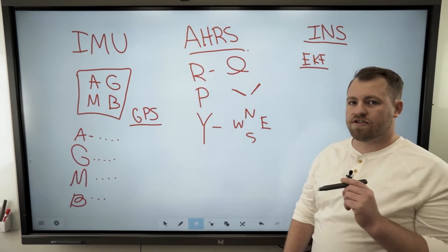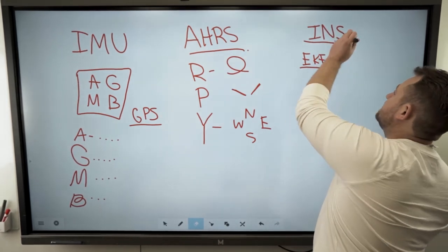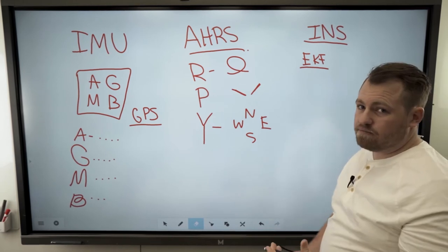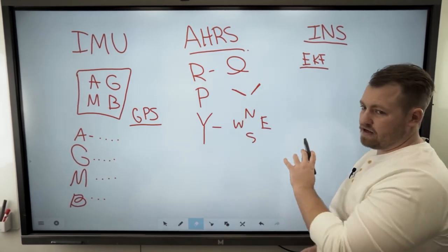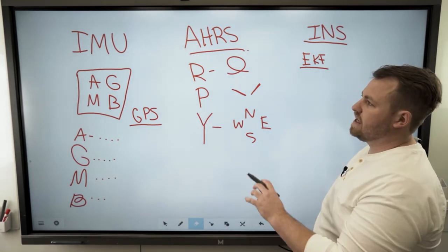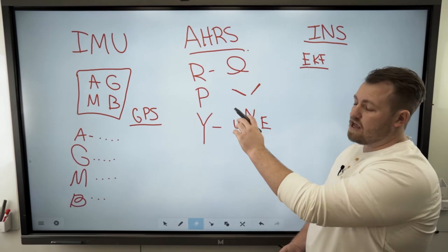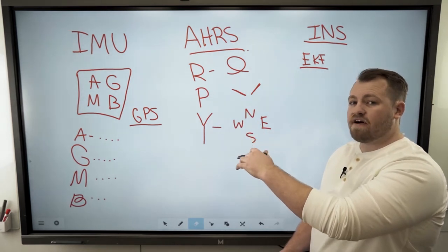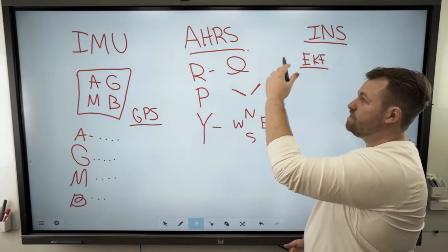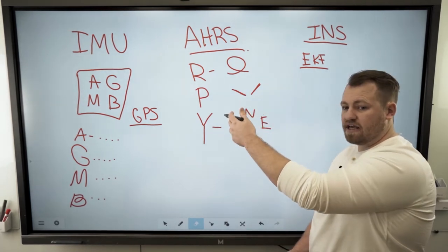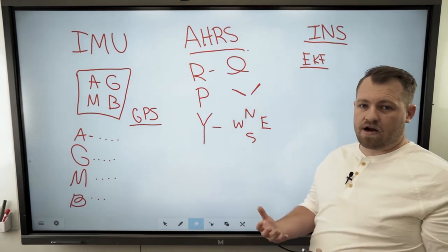INS stands for Inertial Navigation System. The keyword right there is the S. This is a system. A system basically consists of a whole bunch of different tasks being accomplished. It's taking all of the IMU data. It's using a Kalman filter to fuse all that IMU together, and then the final step is it's fusing all of that fused data from the AHRS together with the GPS. This gives you higher precision.